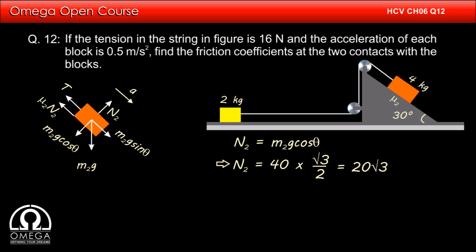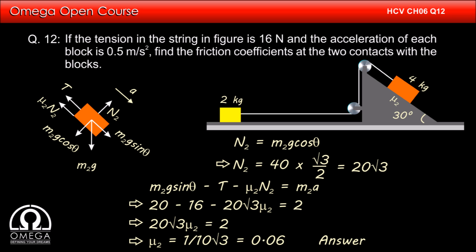Writing the equation of motion along the incline, we get M₂g sin θ minus T minus μ₂N₂ is equal to M₂A. Putting the values, we get 20 minus 16 minus 20 root 3 into μ₂ is equal to 2 or 20 root 3 into μ₂ is equal to 2 which implies μ₂ is equal to 1 by 10 root 3 that is 0.06. This is our answer.